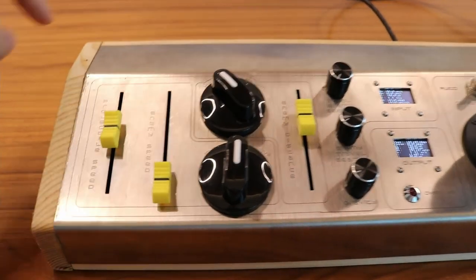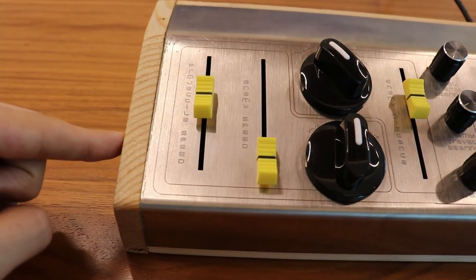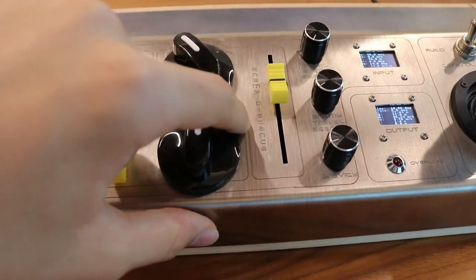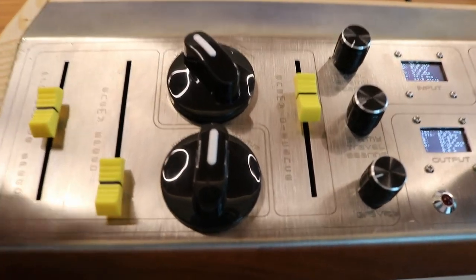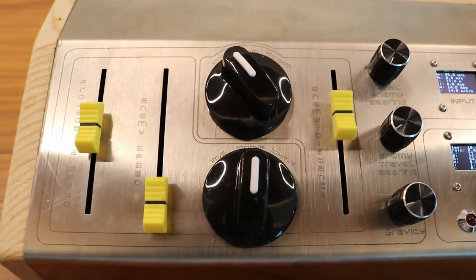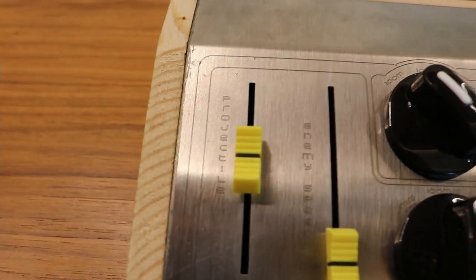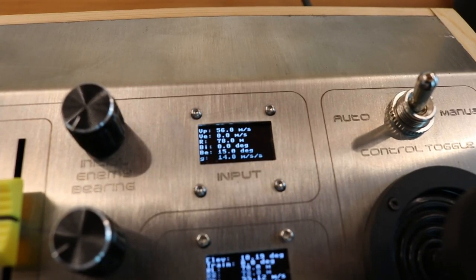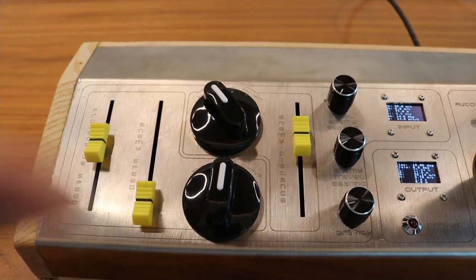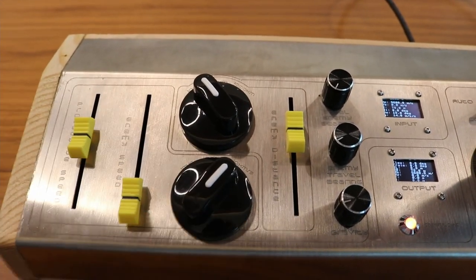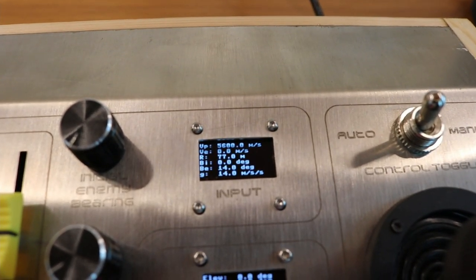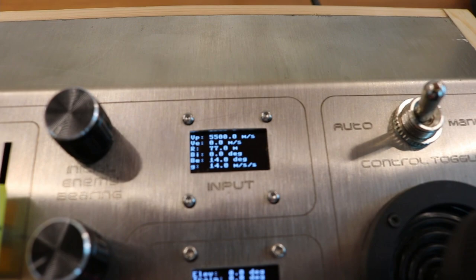For these three inputs over here, this one being projectile velocity, this one being enemy velocity and this one being enemy distance, there are these two dial switches which control their order of magnitude. For example, currently the projectile velocity is reading a value of 55 meters per second. But if I switch this switch up one step, then now it's reading a value of 5,500 meters per second.